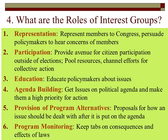Number four is agenda building. Interest groups use agenda building to get issues on the political agenda and make them a high priority for action. They can go in and say, we know there's a bill coming up, member of Congress, and we want you to take this very seriously and act quickly because it's important to our members. The more they hear this, the more likely the member will be to move forward if they believe there's a large constituency behind that issue.